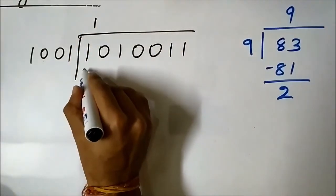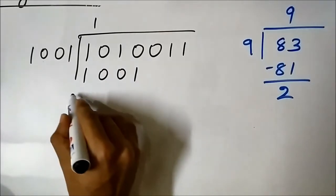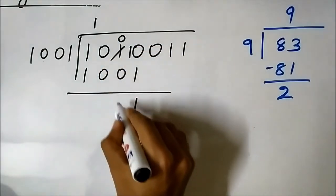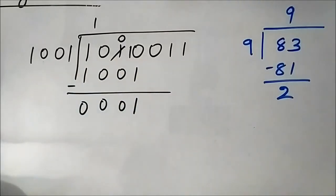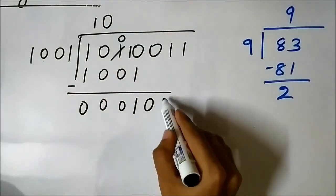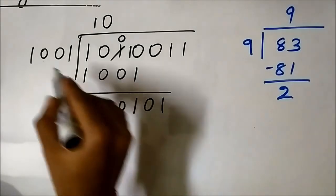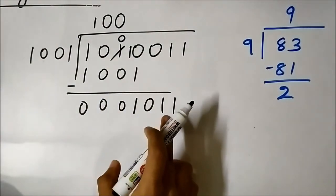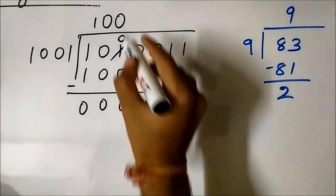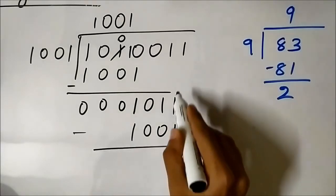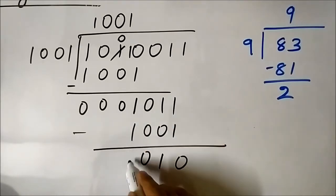We place 1 in the quotient and subtract 1 0 0 1 from 1 0 1 0: 0 minus 1 requires borrowing, giving result 0 0 0 1. Bring down the next bit (0): 1 0 is less than 1 0 0 1, so place 0 and bring down another 1, giving 1 0 1. Still less than 1 0 0 1, so place another 0 and bring down the final 1, giving 1 0 1 1. Since 1 0 1 1 is greater than 1 0 0 1, we place 1 and subtract.